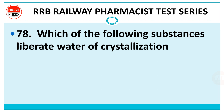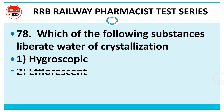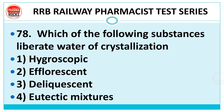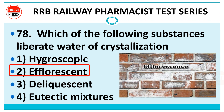Question 78: which of the following substance liberates water of crystallization — hygroscopy, efflorescent, deliquescent, or eutectic mixtures? The right answer is efflorescent. In efflorescence, certain substances remove and liberate water — this is the salting out process. On bricks, for example, white white spots are seen, which is one type of efflorescence.